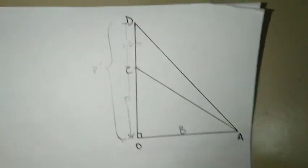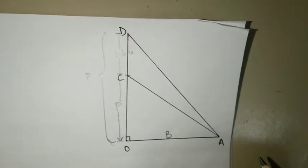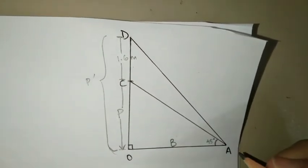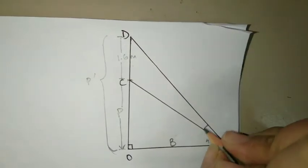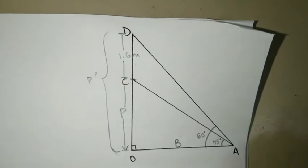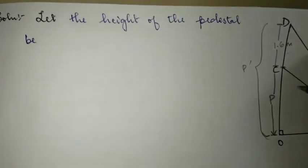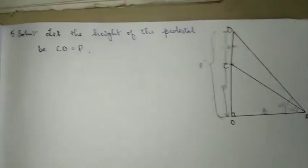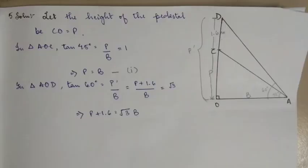They're sharing the same base, okay. So now in the question they're asking us to find the height of the pedestal. Let the height of the pedestal be CO which is equal to P perpendicular for the smaller triangle, okay.